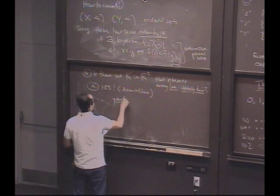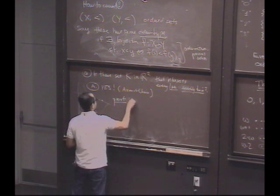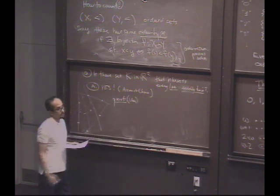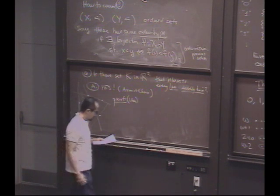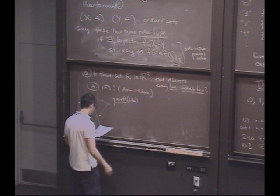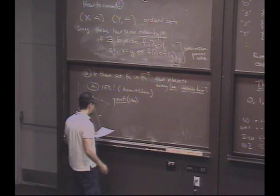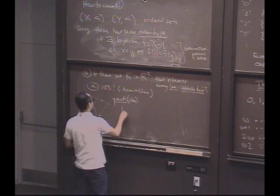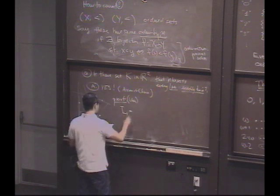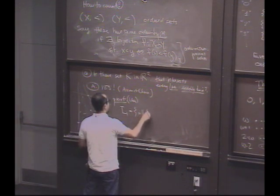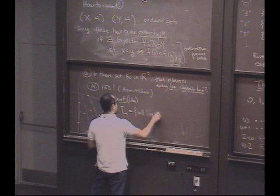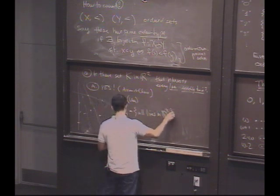So here's a proof. This is a proof idea. A sketch. Because I have to leave some time, actually, for course evaluations. So here's the idea. What we're going to do is let's call the set L, the set of all lines in the plane. Okay.